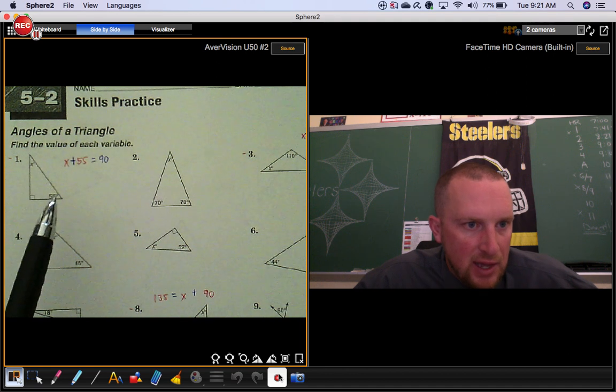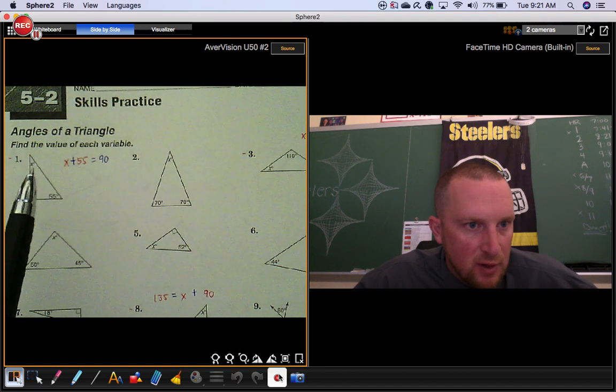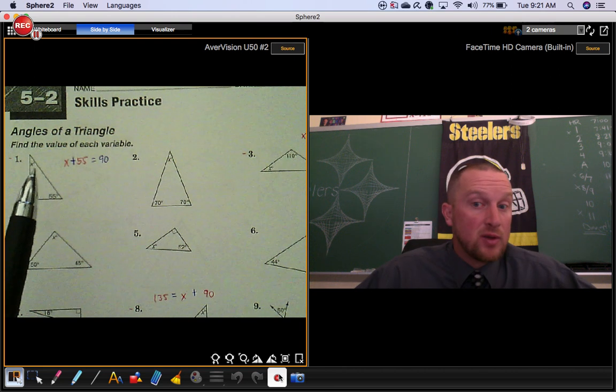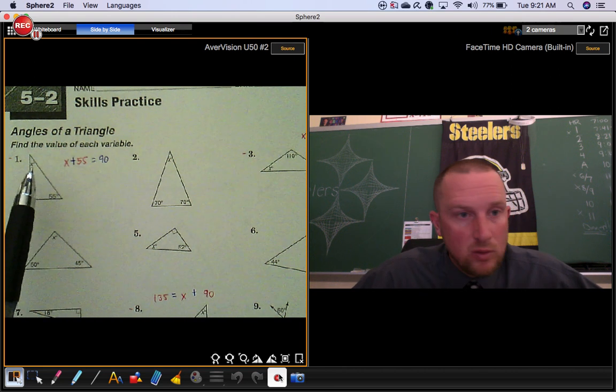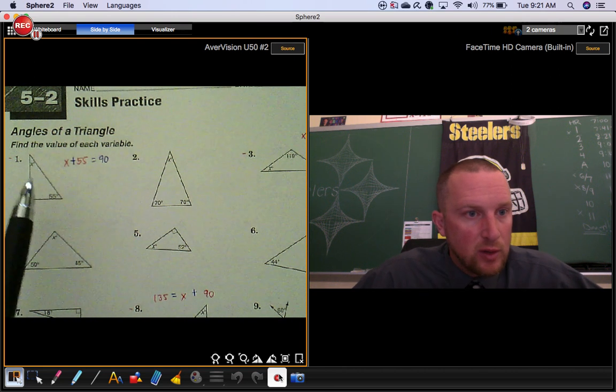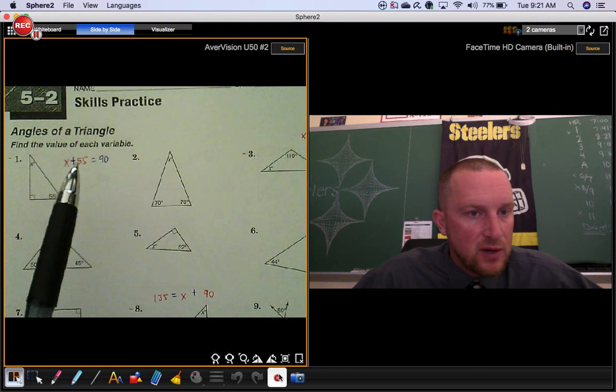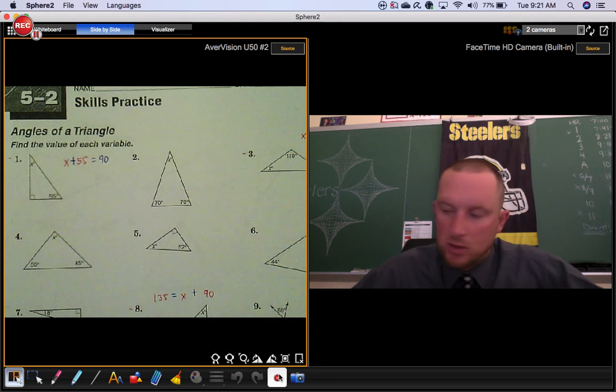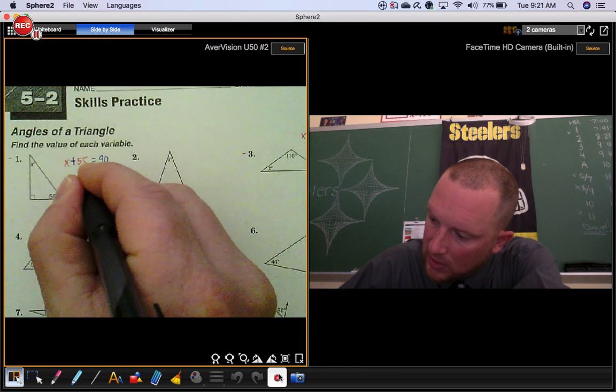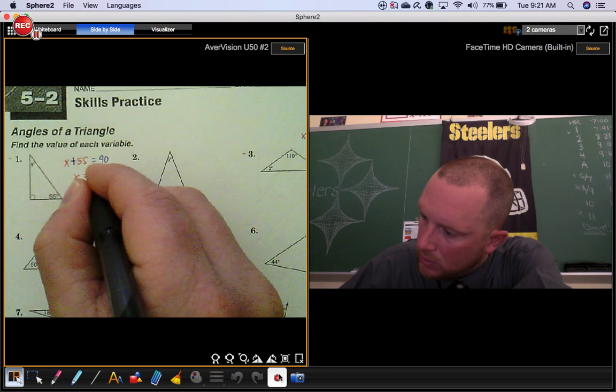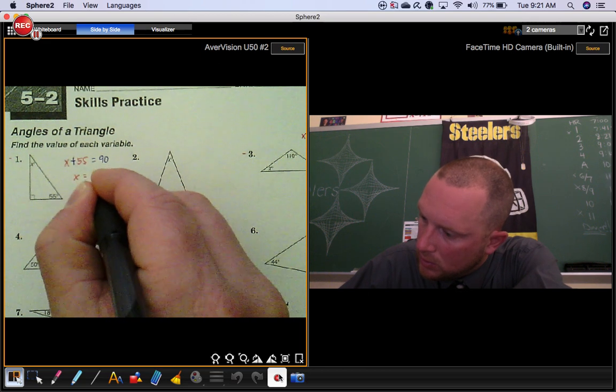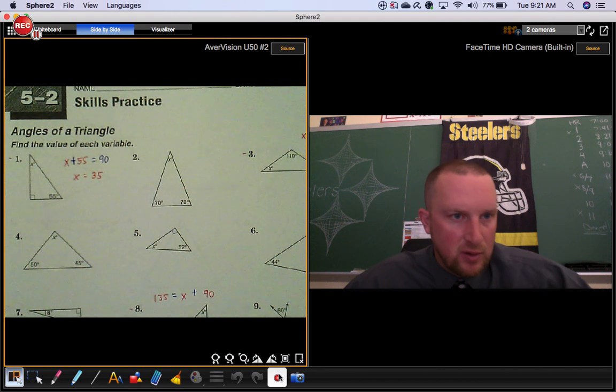So you know two of the angles of a right triangle, you can definitely figure the other one out using your triangle angle sum theorem, or there's a shorter way to do it. You know the two acute angles of a right triangle x and 55 have to add up to 90. So if you subtract 55 from both sides, you're going to end up with 35 degrees for that missing angle.